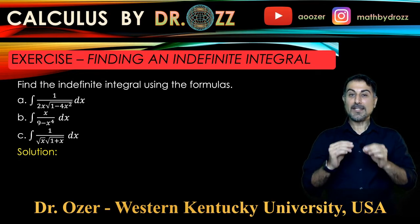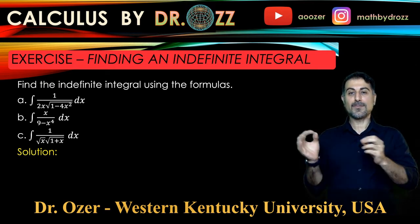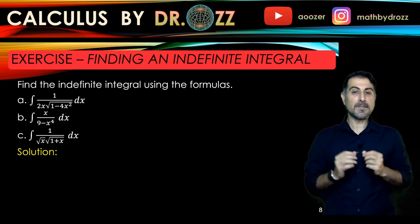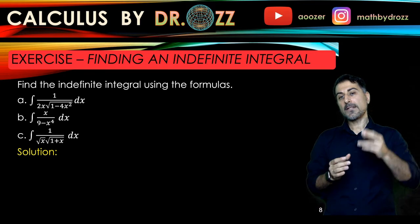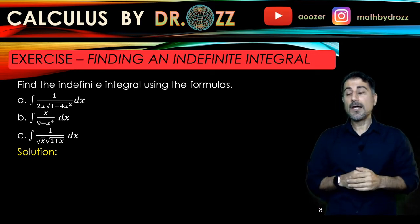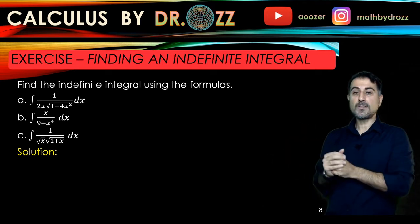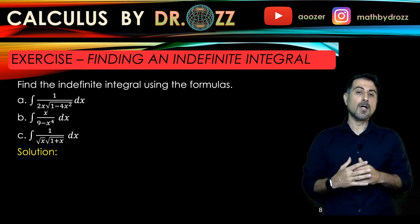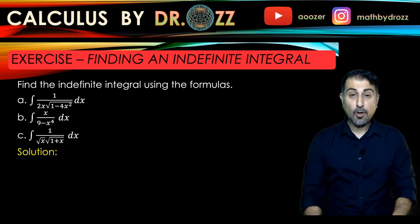Today we're going to find indefinite integrals and each of them has a specific type. In fact, the commonality between A, B and C is that you have a difference or sum of the squares, so we're going to use the formulas.